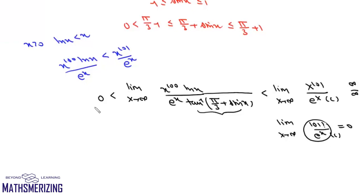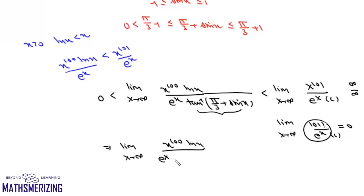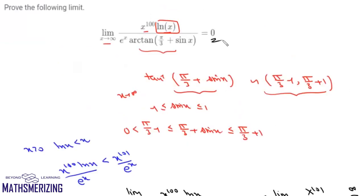So from the sandwich theorem we can say that the limit as x tends to infinity of x to the power 100 times log x upon e to the power x times tan inverse of pi by 3 plus sin x equals 0, which is what we needed to prove.